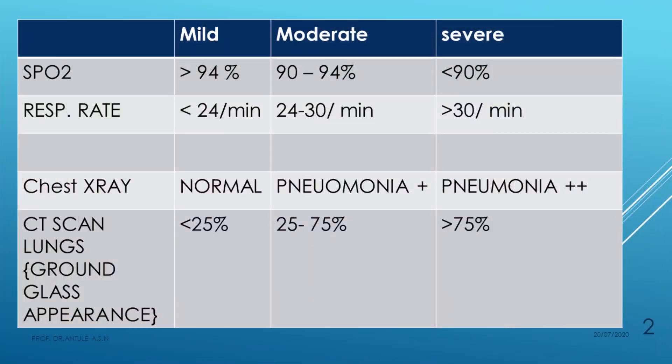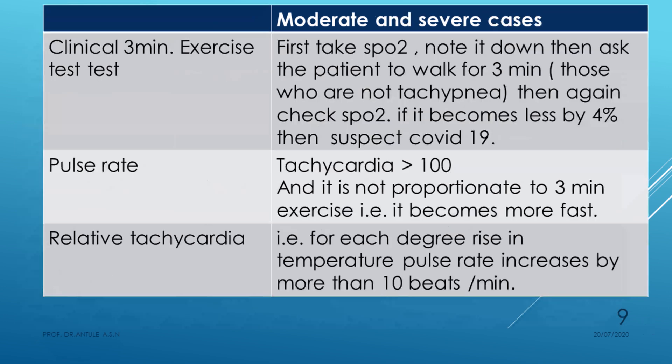On CT scan of the lungs, there will be a ground glass appearance. If it is less than 25% ground glass appearance, it is mild. Between 25 to 75% is moderate. More than 75% ground glass appearance on CT scan of the chest/lungs is considered severe.